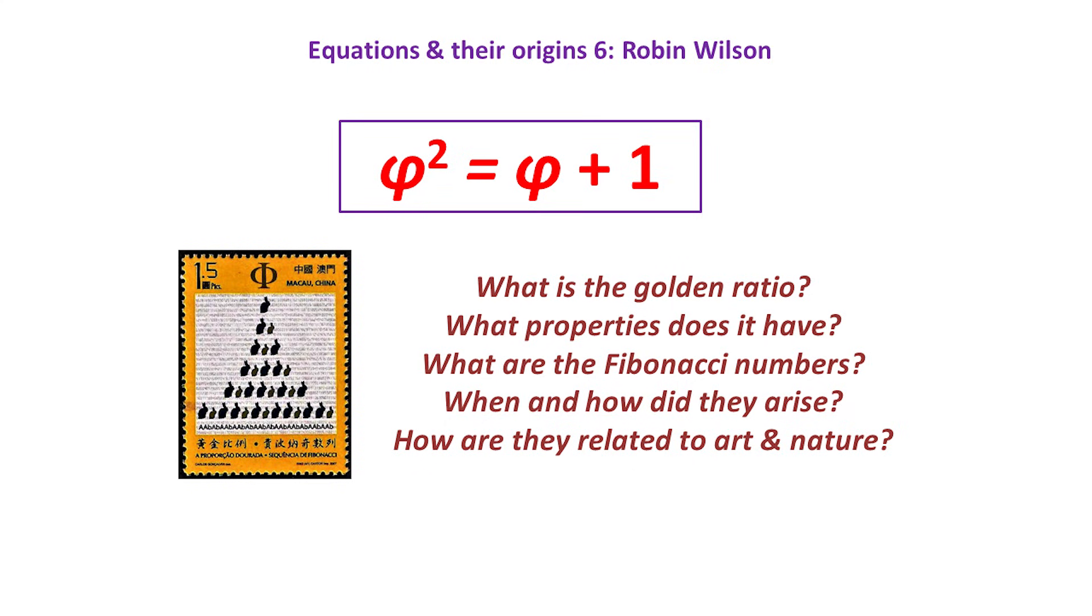This talk is about one of the most fascinating numbers in mathematics, the golden ratio, often denoted by the Greek letter phi. But what is the golden ratio, and what properties does it have? We'll also meet the Fibonacci numbers, but what are these, and how are they related to the golden ratio? And how are these topics related to art and nature?